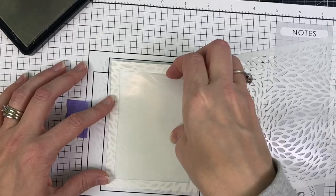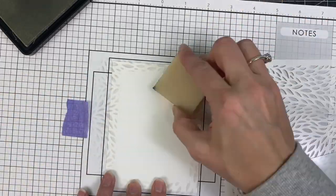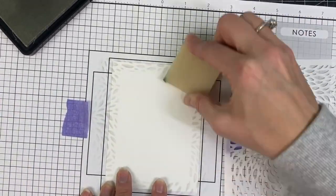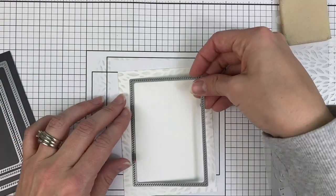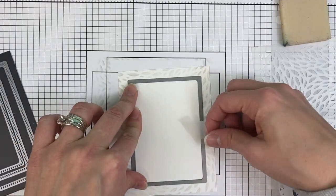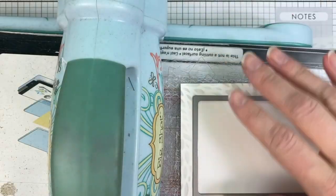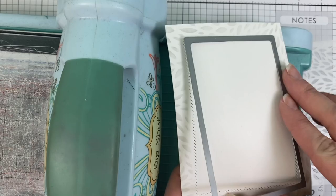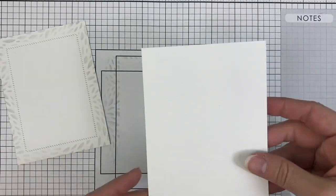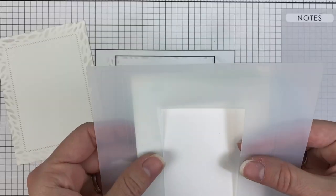Once I have that blended with the Sea Salt ink, I can peel up that piece and remove any excess Pixie Spray using my adhesive remover square. Now here's where that cool diagonal stitch stacklet comes into play. It lines up perfectly with the inside of the rectangle masking stencil to create a little bit of added texture and dimension to your projects, both quickly and easily.